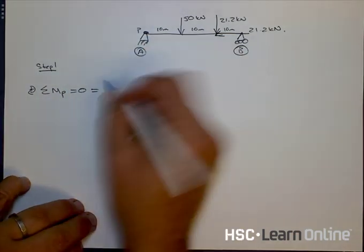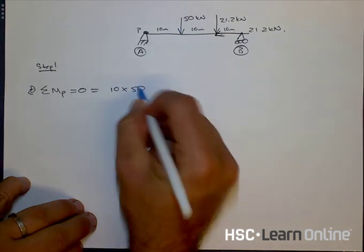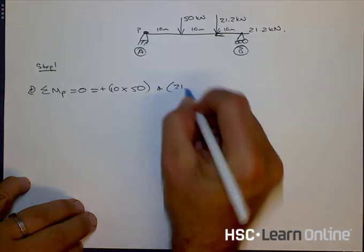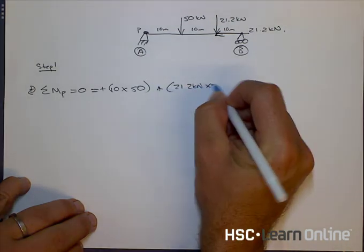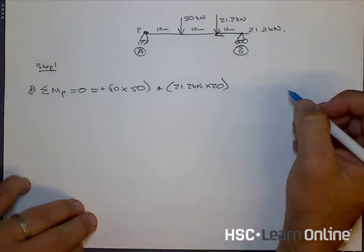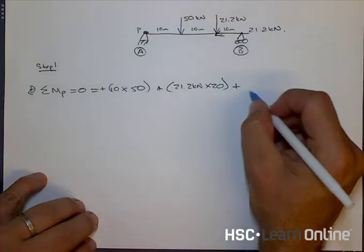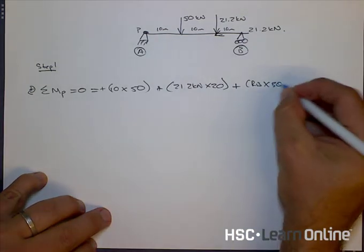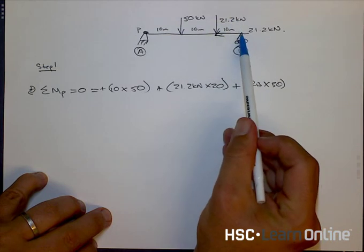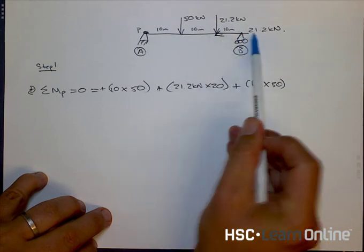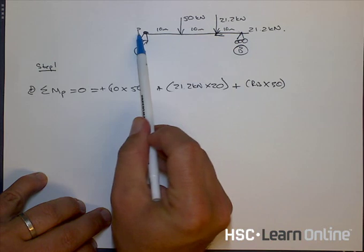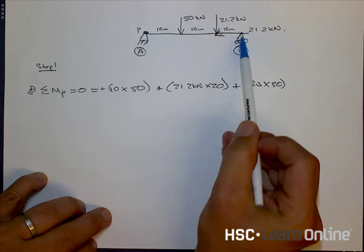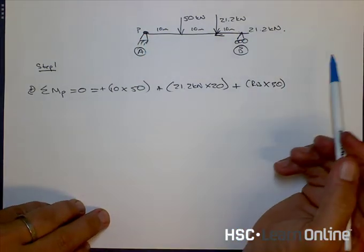And I'm going to say the sum of those moments are 10 times 50, and that's clockwise so it's positive, plus 21.2 kilonewtons times 20, because it's 10 and 10, plus the reaction at B multiplied by 30. Now the reason we can ignore the force of horizontal of 21.2 is because that force is passing through the point P, and we know that when we're calculating moments, any force passing through a point equals zero.